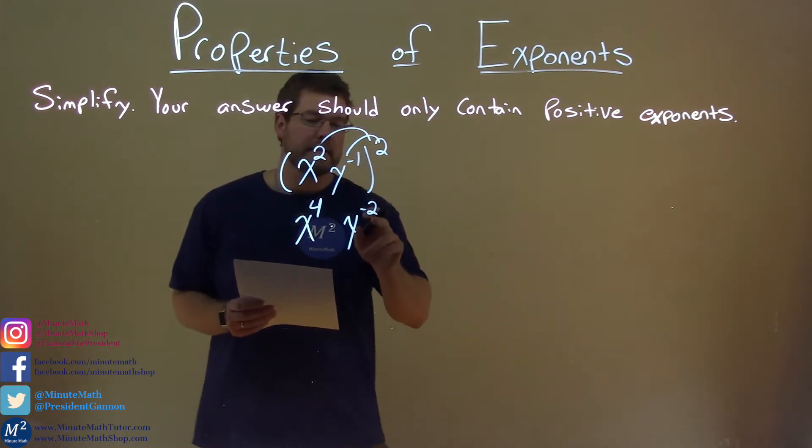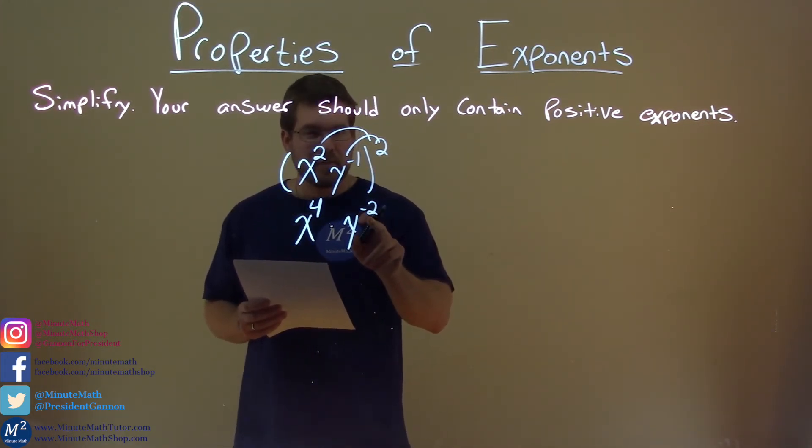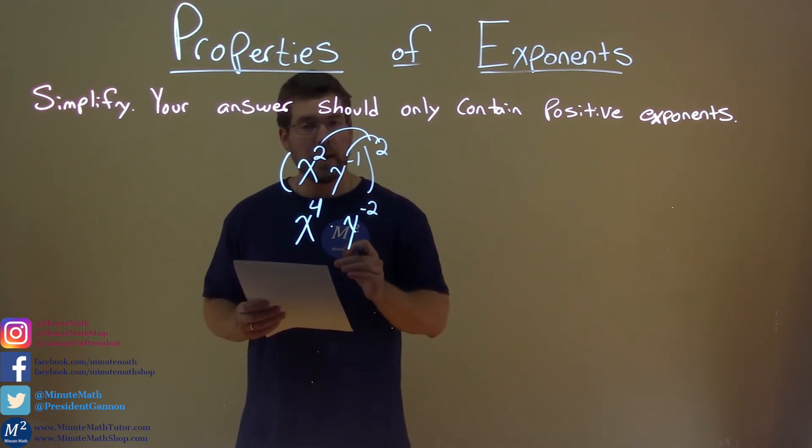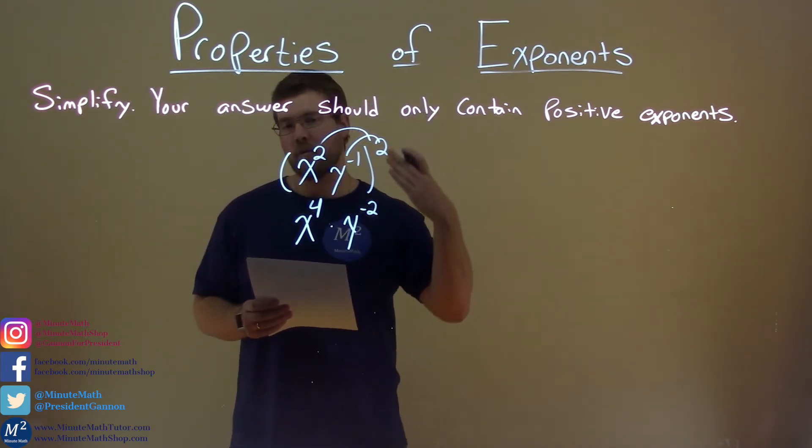But we cannot write our exponents to be negative. So what do we do? Well, we know y to the negative 2 power is the same thing as 1 over y squared.